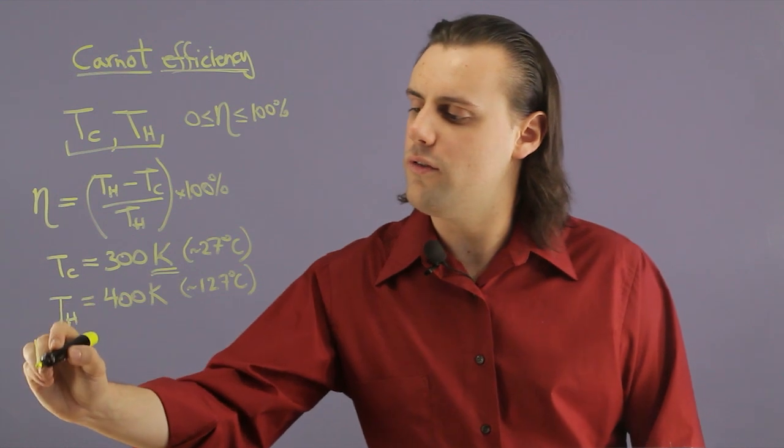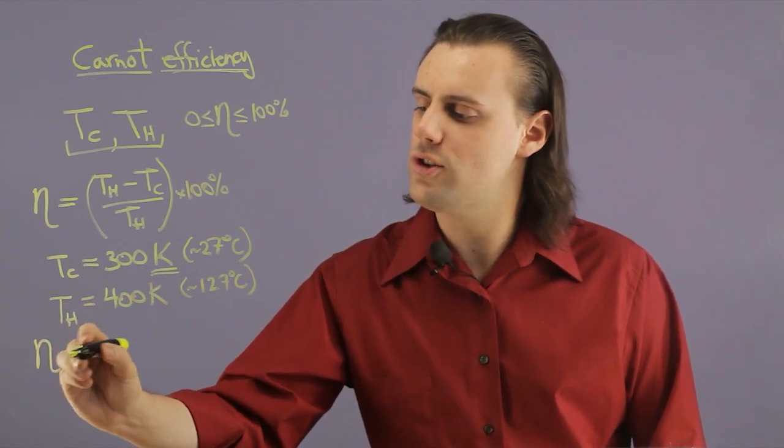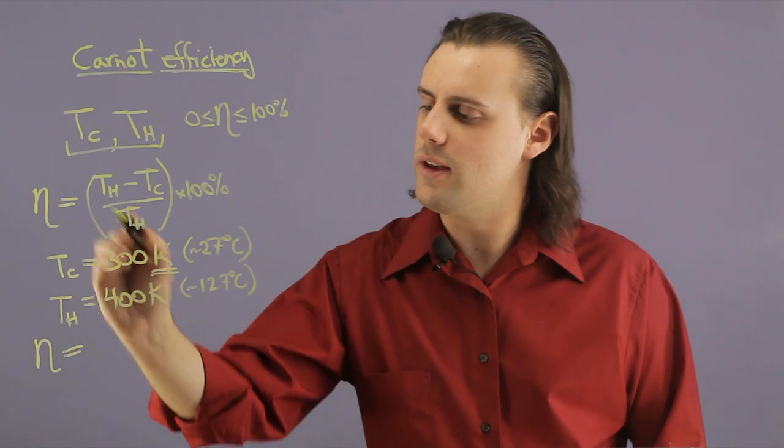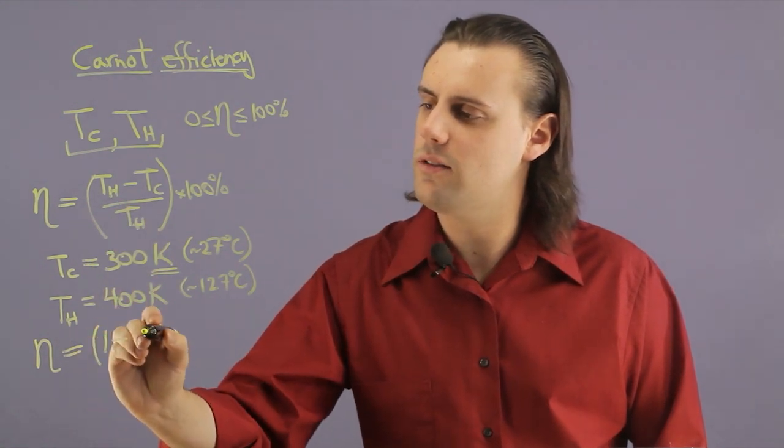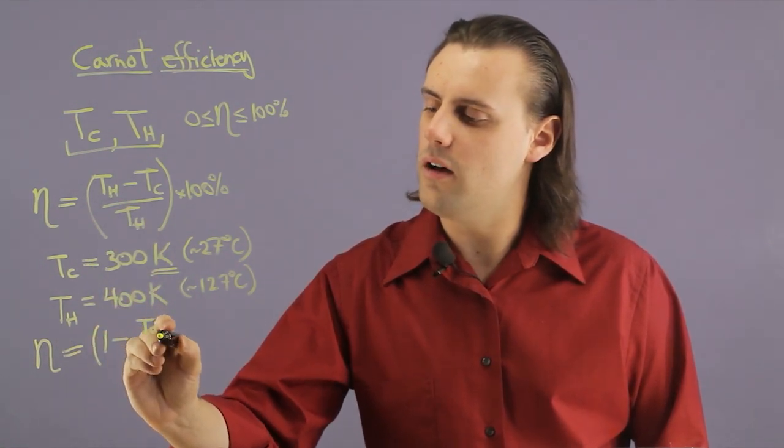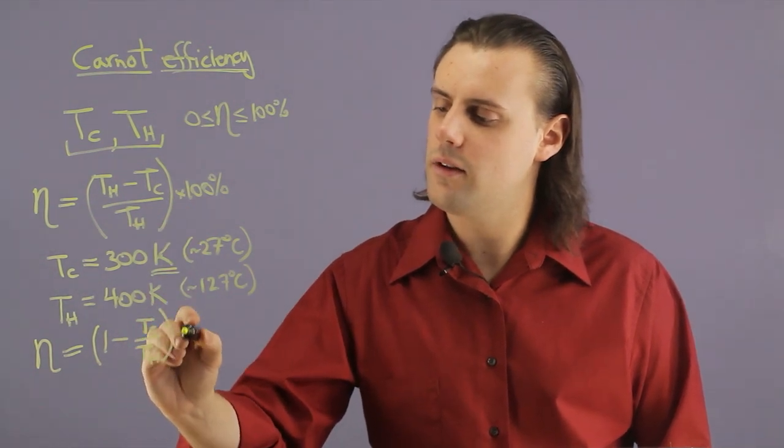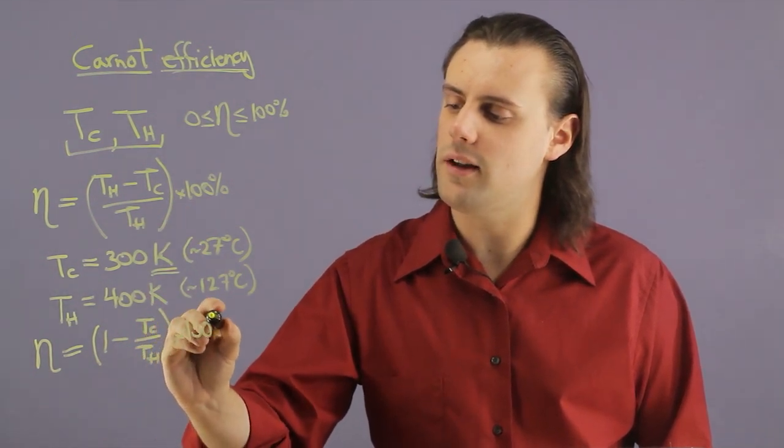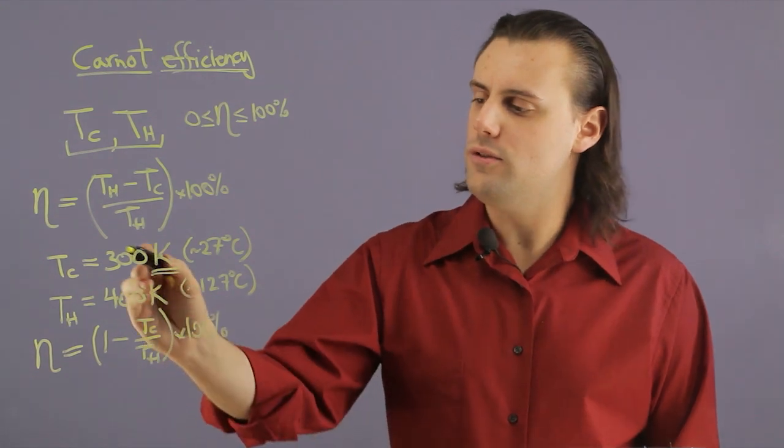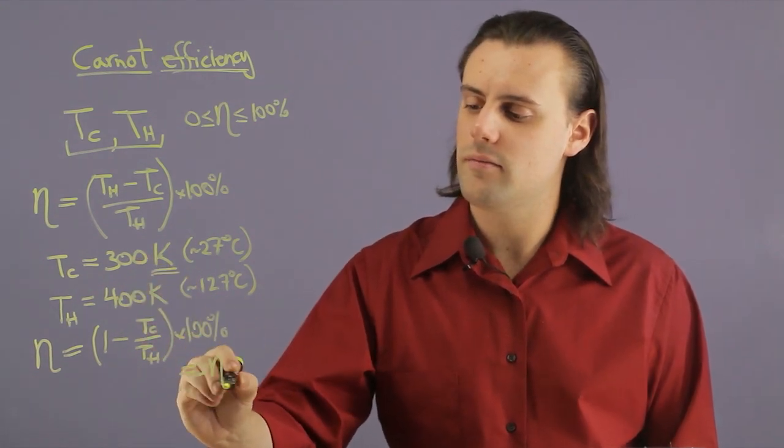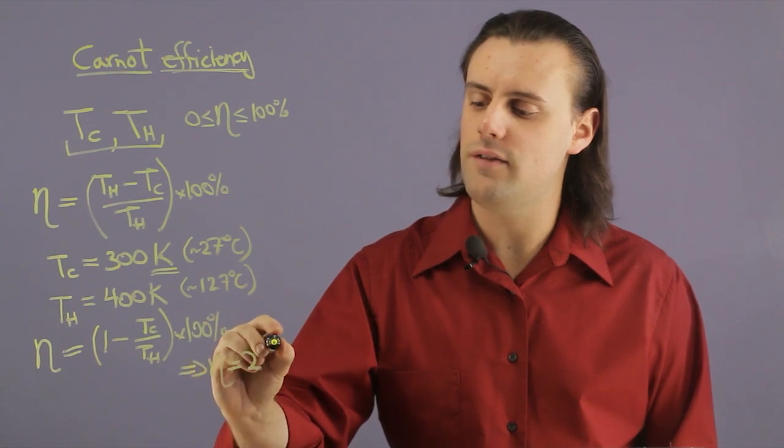So if we plug these numbers into our expression for the efficiency we see that we can simplify this to 1 minus the ratio of the temperature of the cold reservoir to that of the hot and multiply by 100%. And when we use these numbers we end up with an efficiency of 25%.